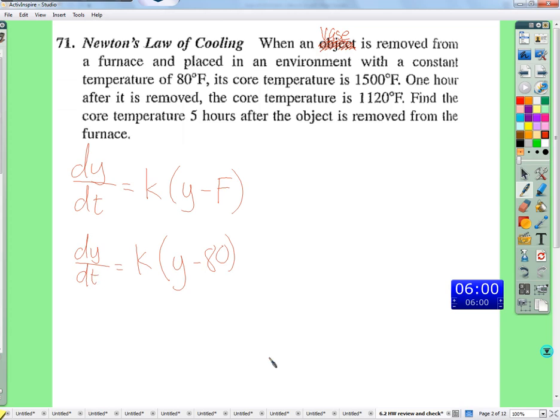Someone separate these variables and tell me what it's going to look like. We could multiply the dt on both sides and divide by y minus 80 on both sides. So, we'll wind up with dy over y minus 80 equals k dt. Remember, k is just a constant. k might be 5 or 7. It's just a number multiplied by dt. We have a constant multiple so it can come outside of the anti-derivative.